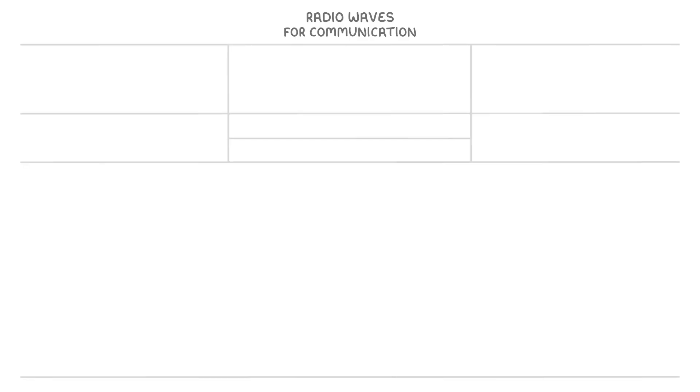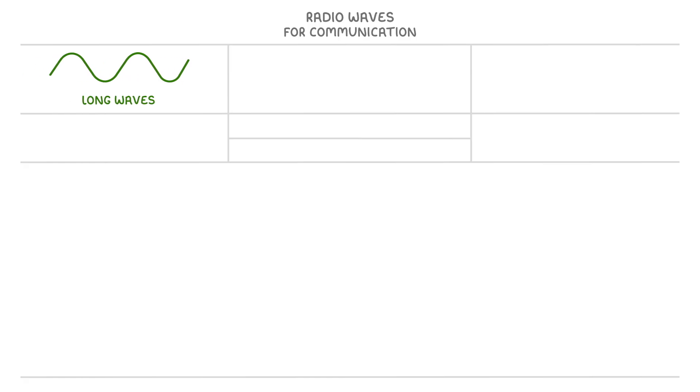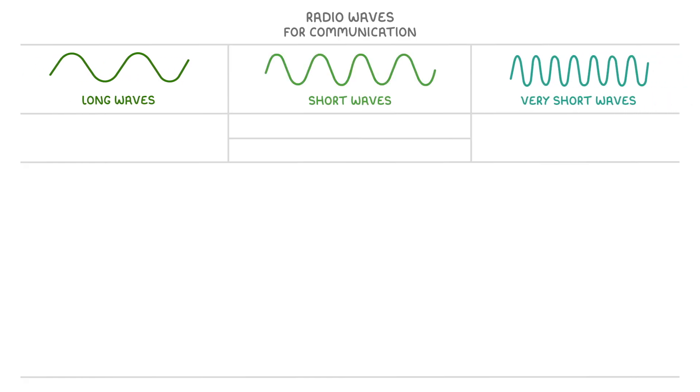In fact, the main use of radio waves is for communication. And there are three types that you need to know about: long wave, short wave, and very short wave.